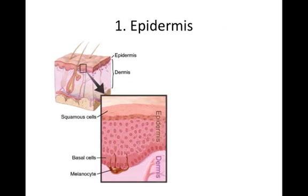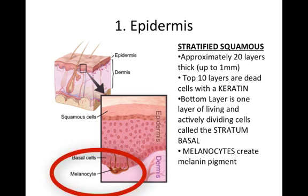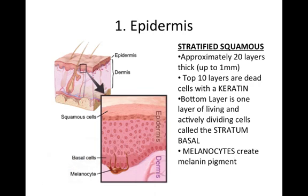Looking more closely at the epidermis — the stratified squamous layer of the skin — it's approximately 20 layers thick, or up to a millimeter. The top 10 layers are dead cells with a waterproof protein called keratin. The bottom layer is only one layer thick and consists of living cells that are actively dividing, called the stratum basal layer. Interspersed in that bottom layer are specialized epithelial cells called melanocytes, which create melanin — the pigment of skin. All humans are different shades of brown; we all have the same number of melanocytes, but their activity is programmed by our genetic code to produce more or less melanin.